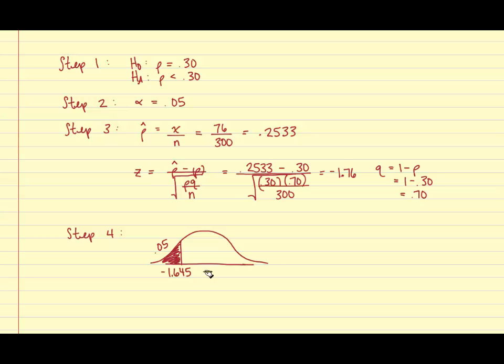Our next step is to determine whether or not we can reject the null hypothesis. So our test statistic of negative 1.76 actually does fall into the rejection region. And therefore, we are able to reject the null hypothesis.